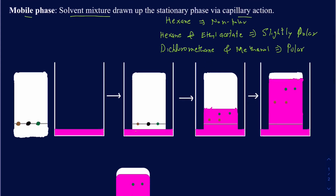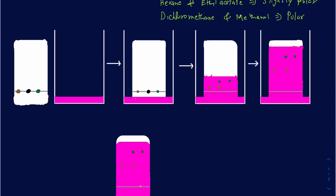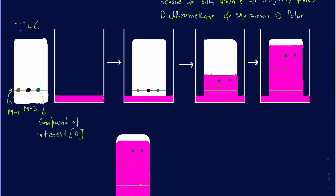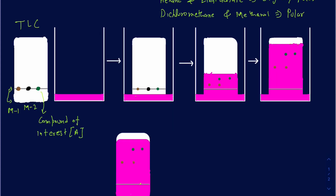Suppose you have this experimental setup with a TLC plate and three compounds laid out on a line — the baseline or starting point — which you want to place about a quarter of an inch from the bottom of the TLC plate. The first dot, slightly brown in color, will be called mixture one. The second dot, slightly black, will be mixture two. The green dot is the compound of interest — let's call it compound A. Our job is to figure out if mixture one and mixture two contain compound A.